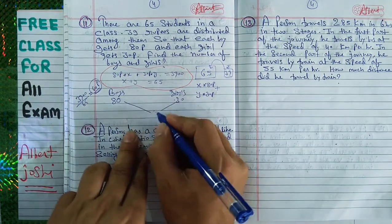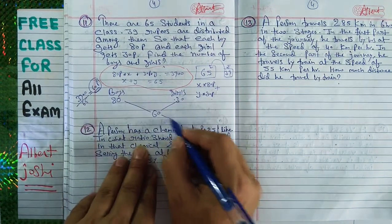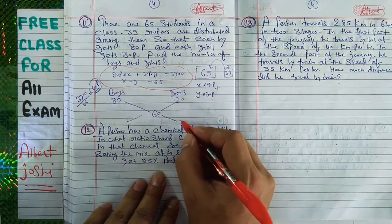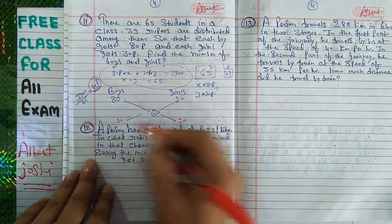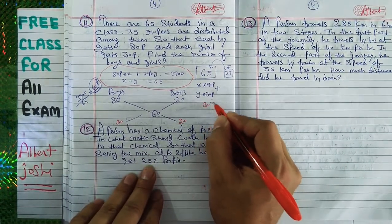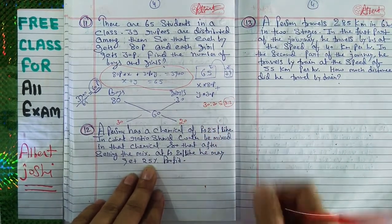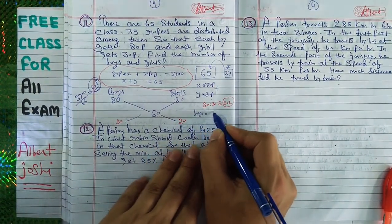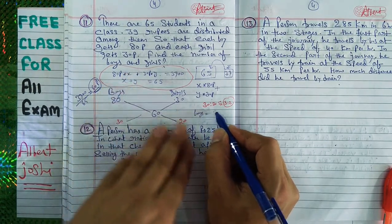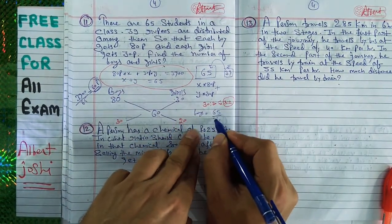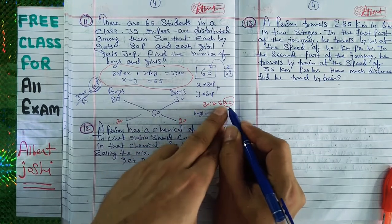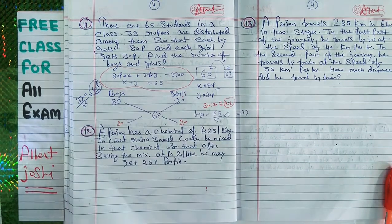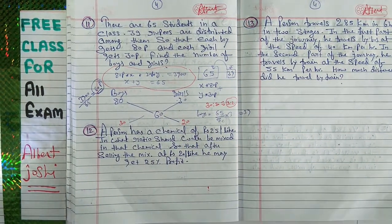The mean value is 60. So 80 minus 60 equals 20, and 60 minus 30 equals 30. Your ratio is 30:20, which simplifies to 3:2. The number of boys equals 65 multiplied by 3 upon 5, which is 39.